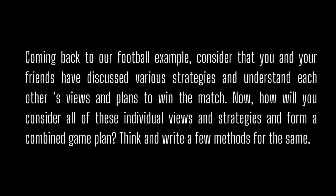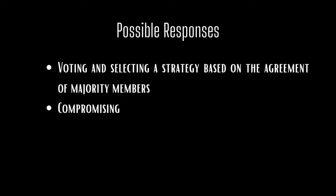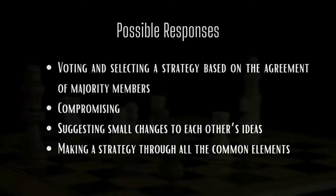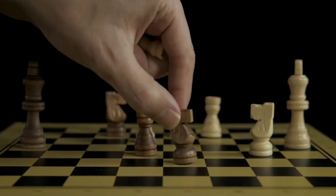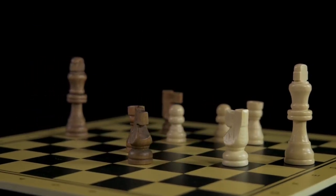Your possible responses might include: voting and selecting a strategy based on the agreement of the majority of members, compromising, suggesting small changes to each other's ideas, and making a strategy through all the common elements. These are a few strategies that are also very commonly used in a Model UN conference in its final stage, where delegates try to solve the problem at hand after days of discussion and deliberation. However, similar to various other phases, even in this stage the rules and procedures for arriving at decisions happen differently based on different procedures.